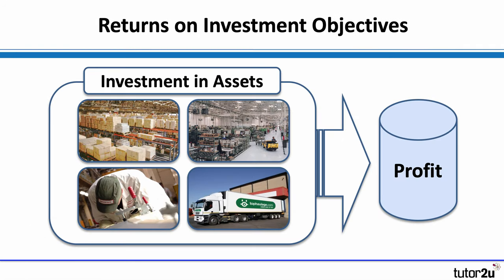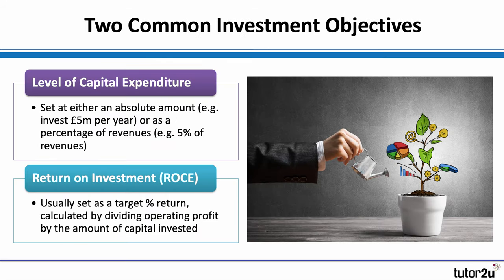Cash flow is important, and so too is return on investment. This type of financial objective links closely to investment appraisal. Businesses of all sizes — both capital-intensive and labour-intensive — must invest in assets and capabilities. Those investments should earn a return, which is profit. Financial objectives related to investment come in two forms: firstly, the absolute level of capital expenditure — for example, investing £5 million or £10 million per year, possibly expressed as a percentage of revenues — and secondly, a measure of return on investment, such as return on capital employed (ROCE).